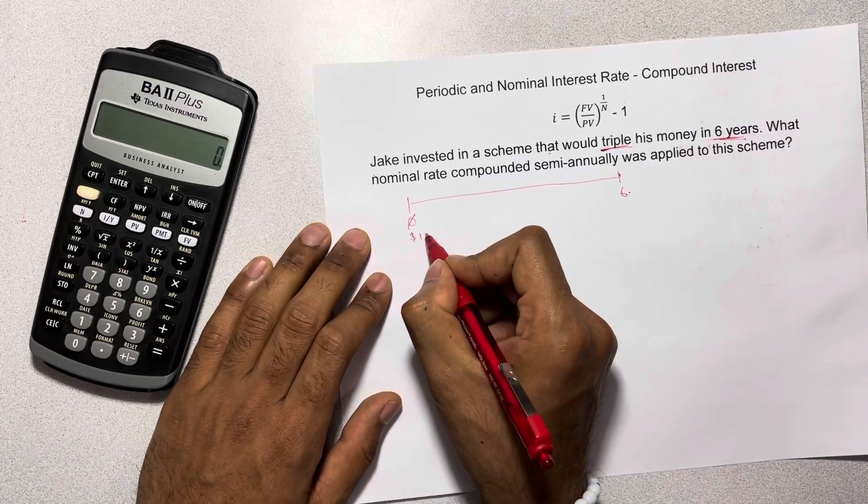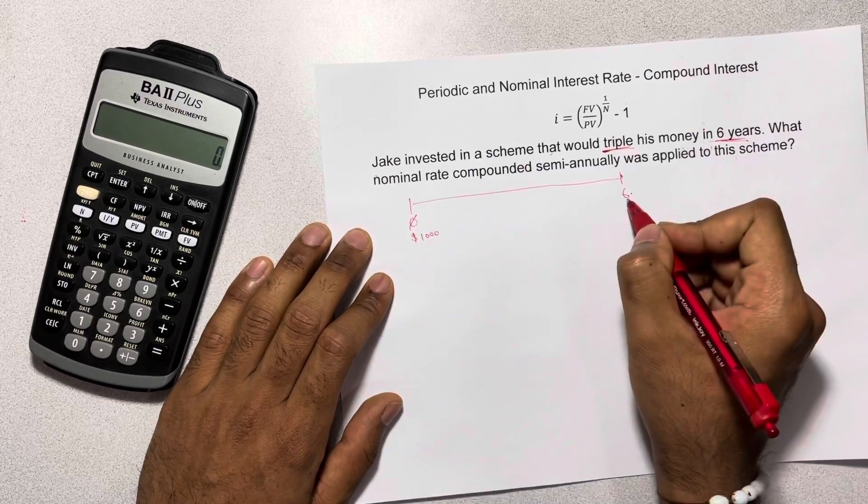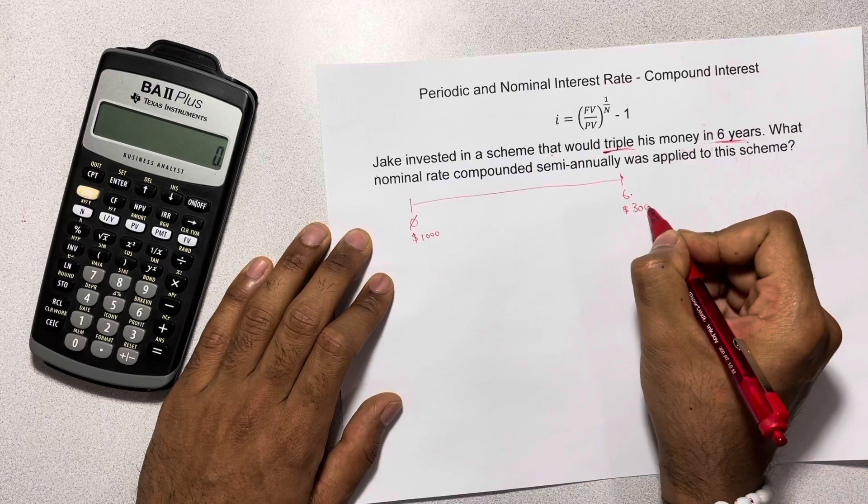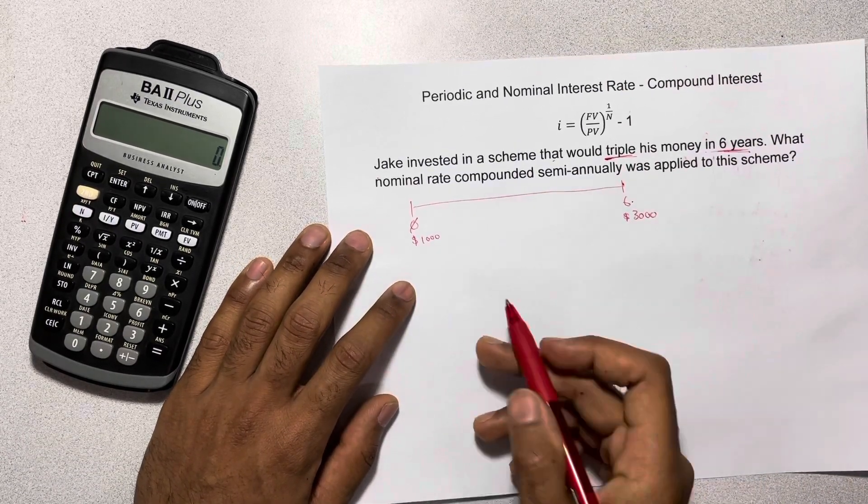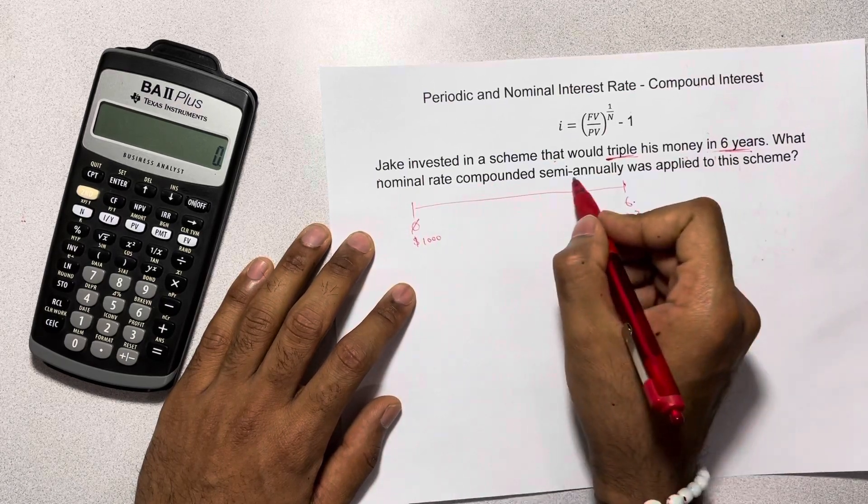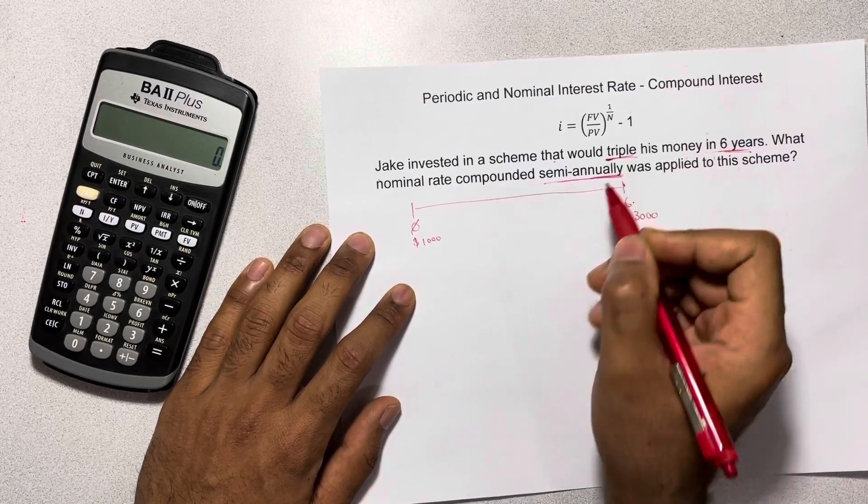So let's say that if he invested $1,000 today, at the end of 6 years he would have it as $3,000. Now another thing we know is that the interest rate, the nominal interest rate, was being compounded semi-annually.